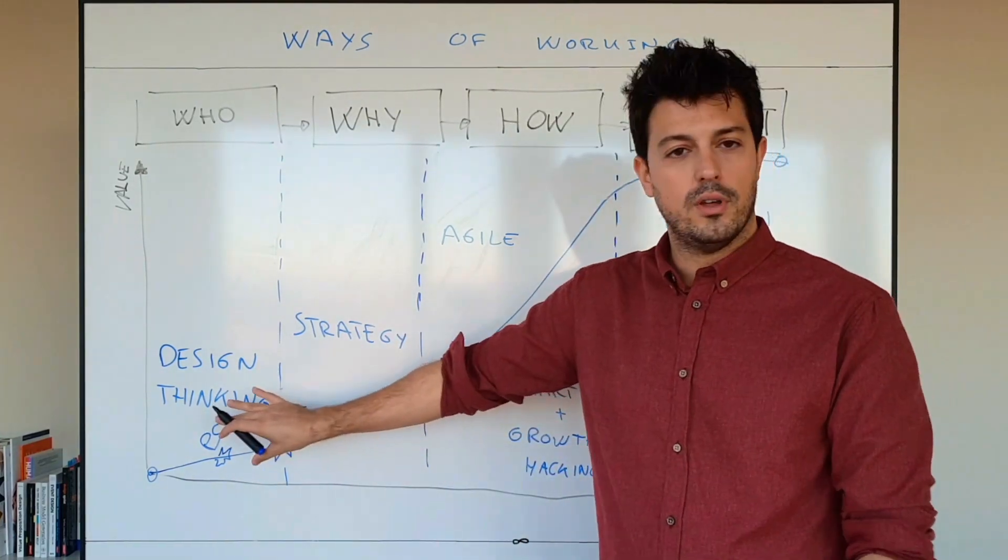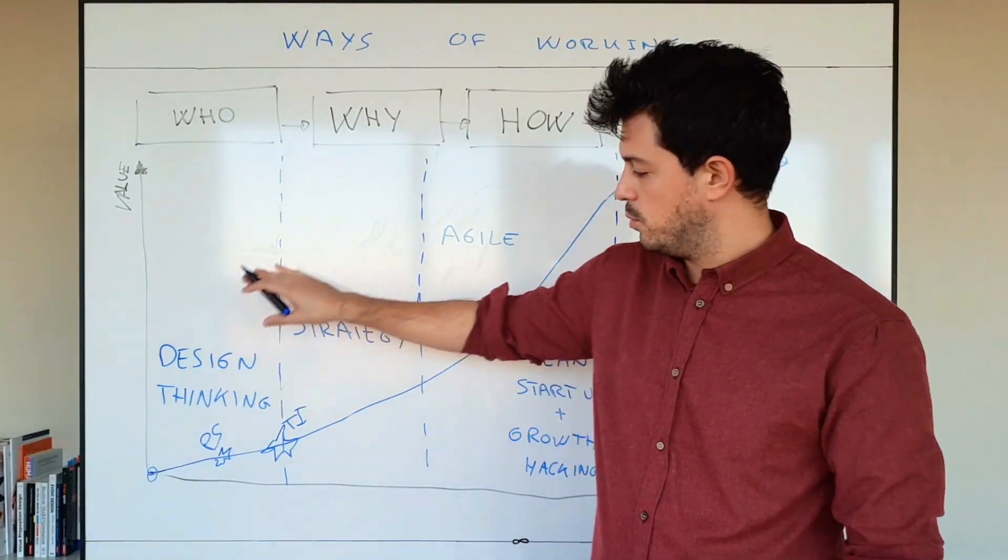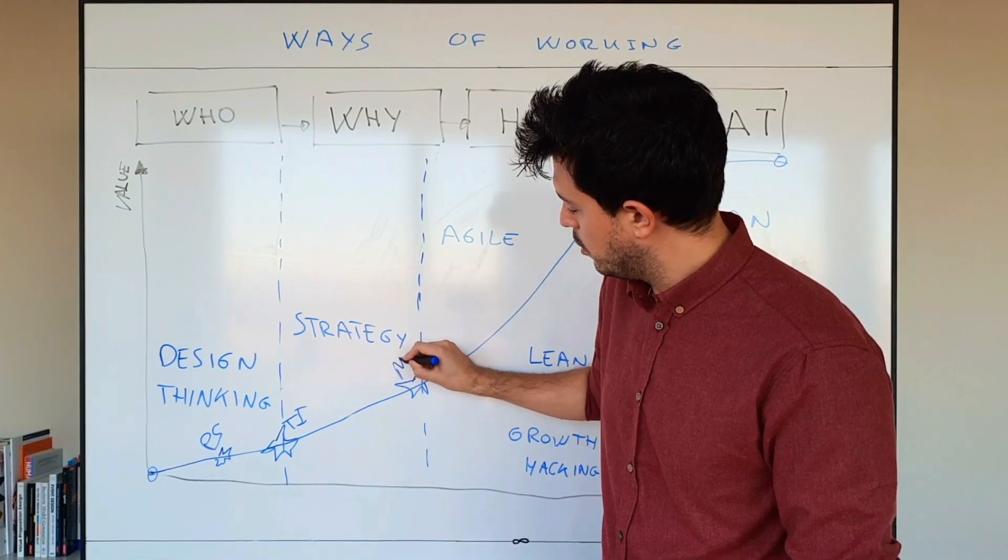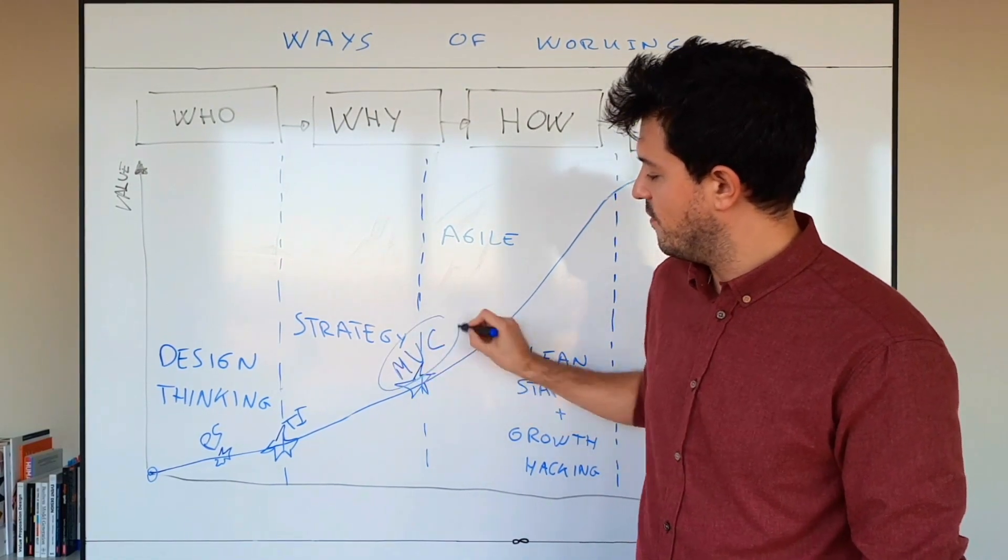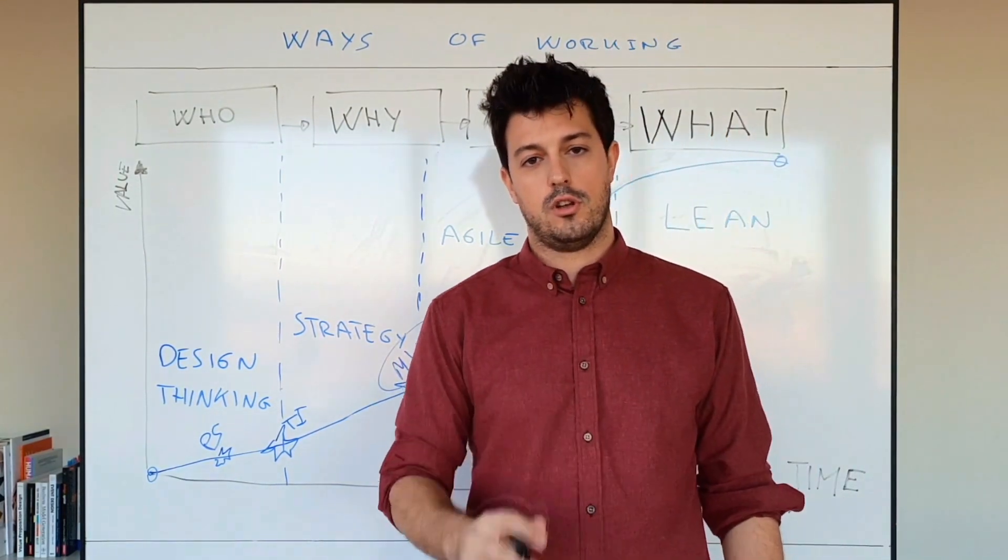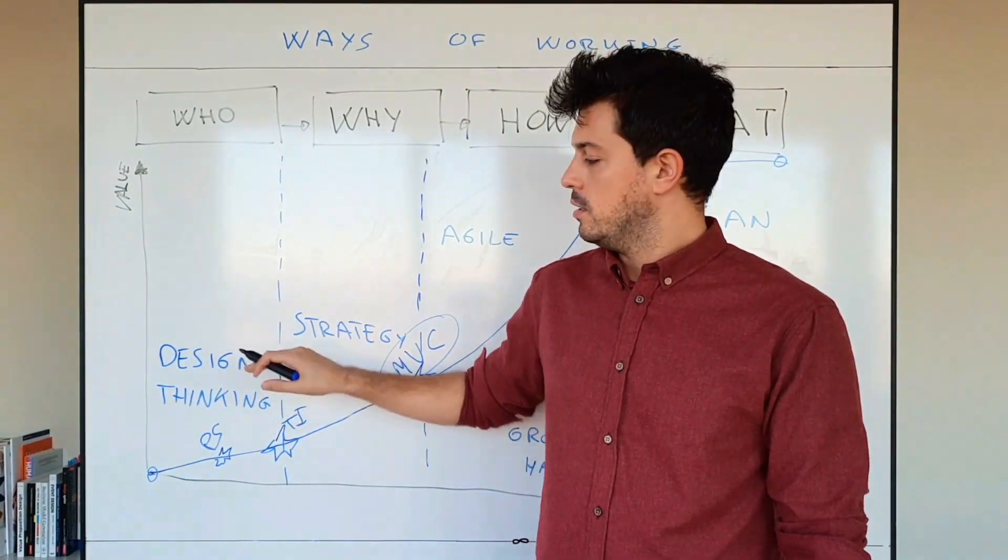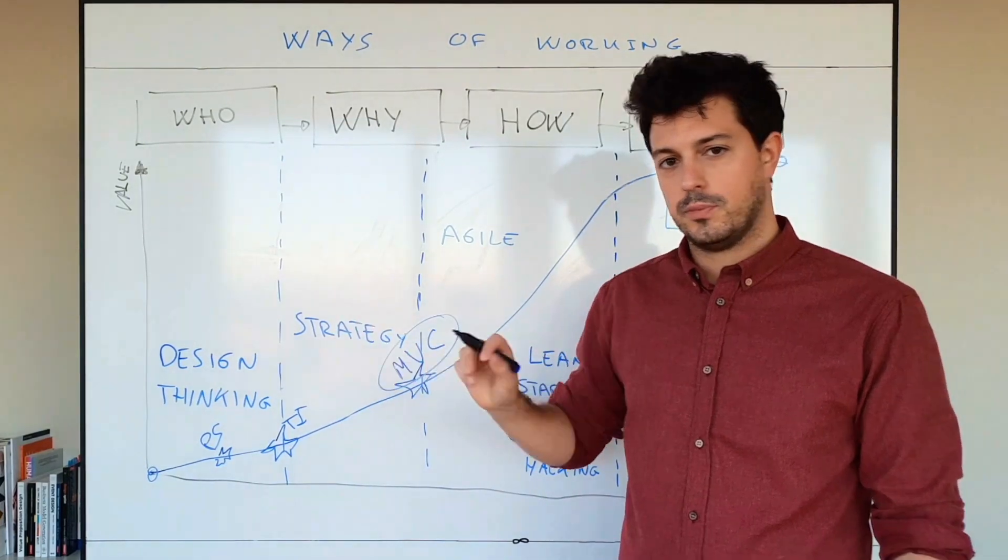So when we have coupled the design thinking process with the strategy process we will come up with something what we may call a minimum viable concept, so MVC, minimum viable concept. Really important, we really have nailed the design with the strategy.